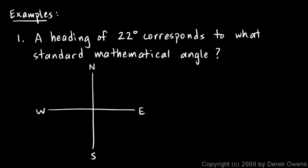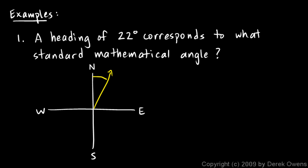Example 1 says: a heading of 22 degrees corresponds to what standard mathematical angle? A heading of 22 degrees means 22 degrees clockwise from north. That's your heading — a 22-degree angle. The question is, what is the standard mathematical angle?